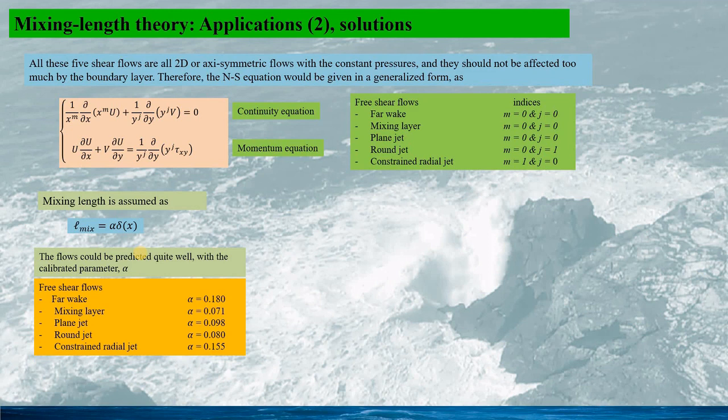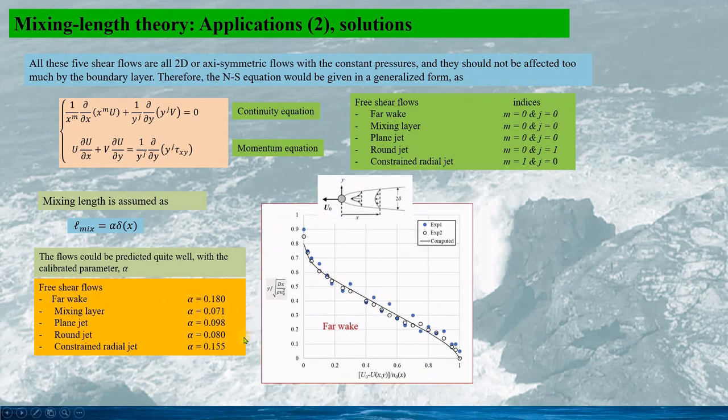However, alpha is the constant for each specific flow, but for the five different shear flows, alpha would be different. See here, the value alpha is fine-tuned using the corresponding experiment data. So once the mixing length is fine-tuned, the prediction of the mixing length theory would be very good.